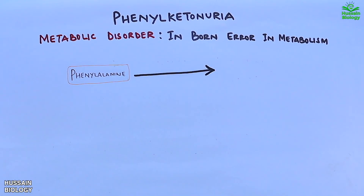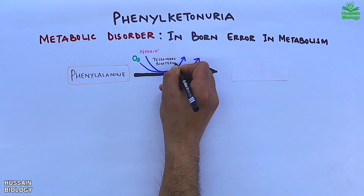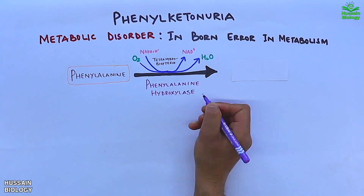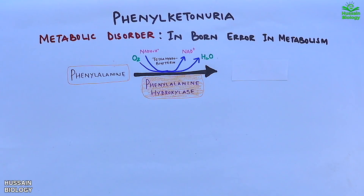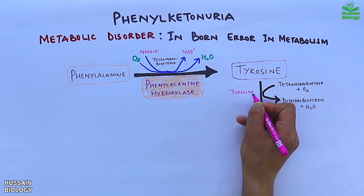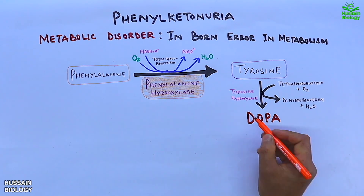Phenylalanine amino acid, in the presence of oxygen, NADH, and tetrahydrobiopterin, is acted upon by phenylalanine hydroxylase enzyme and converted into tyrosine, along with water and NAD+. In the next step, this tyrosine molecule is acted upon by tyrosine hydroxylase enzyme in the presence of tetrahydrobiopterin and oxygen, converting tyrosine into DOPA.